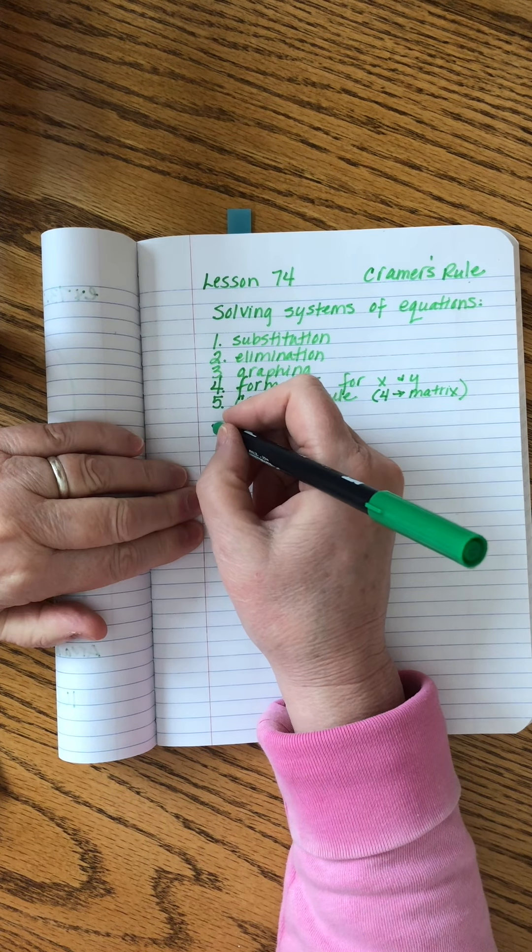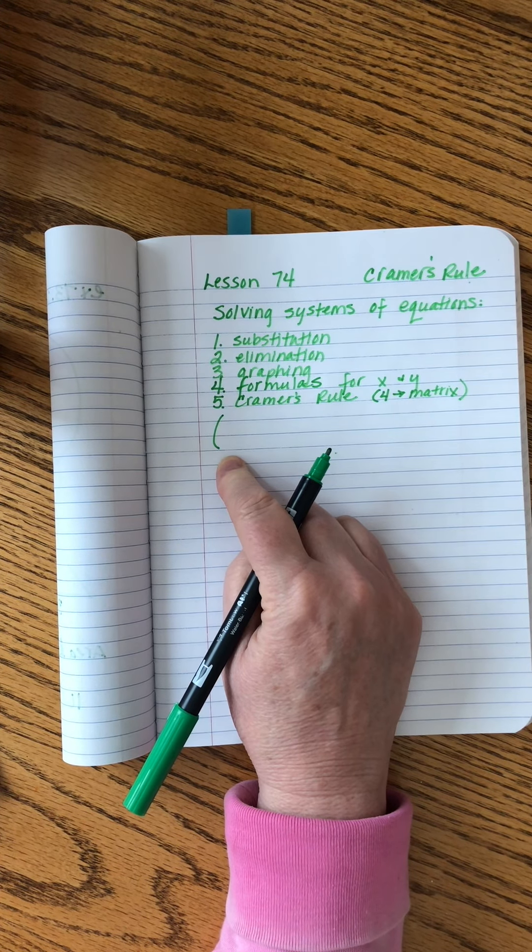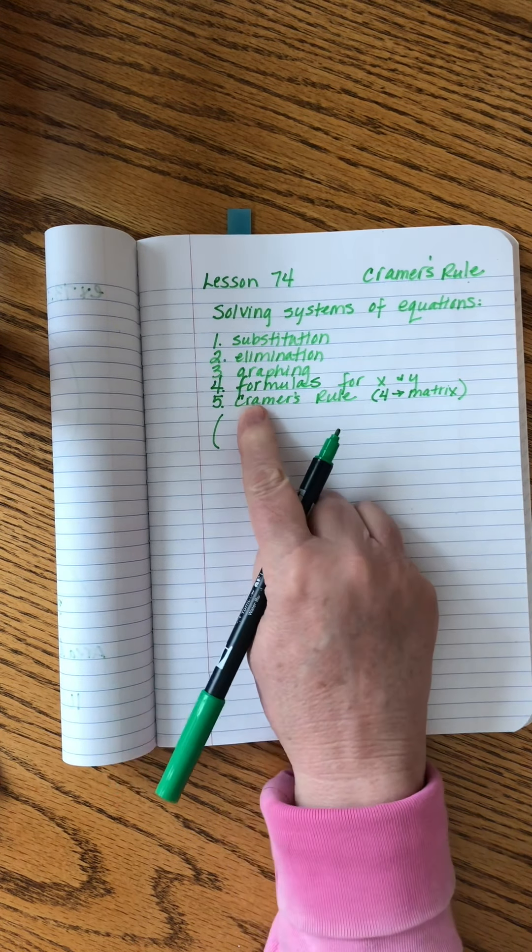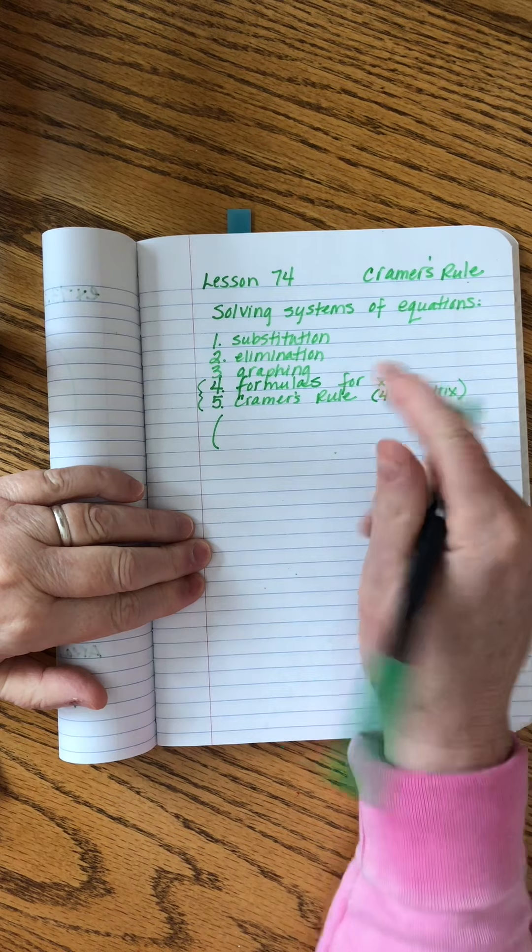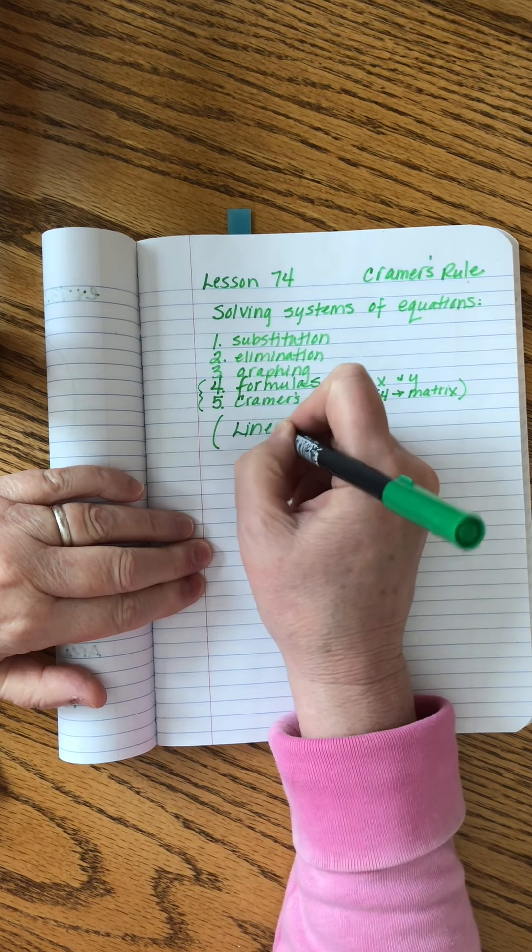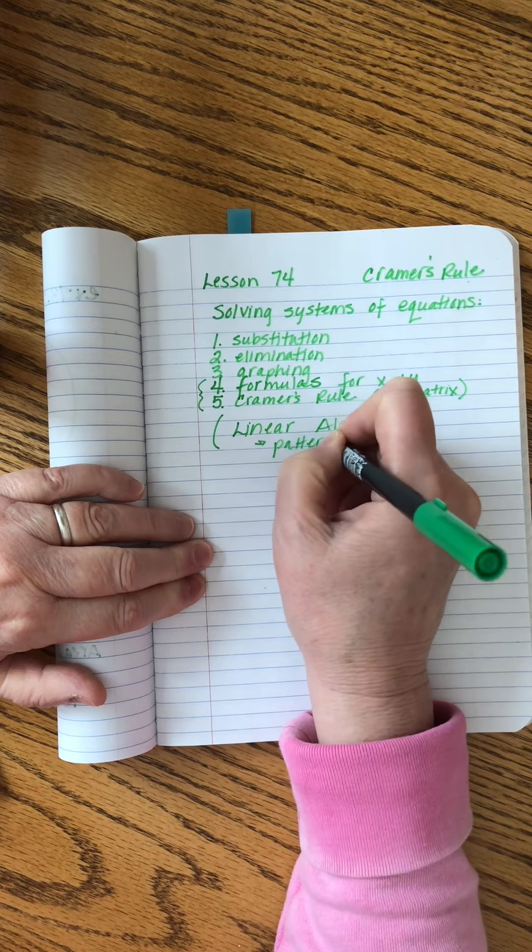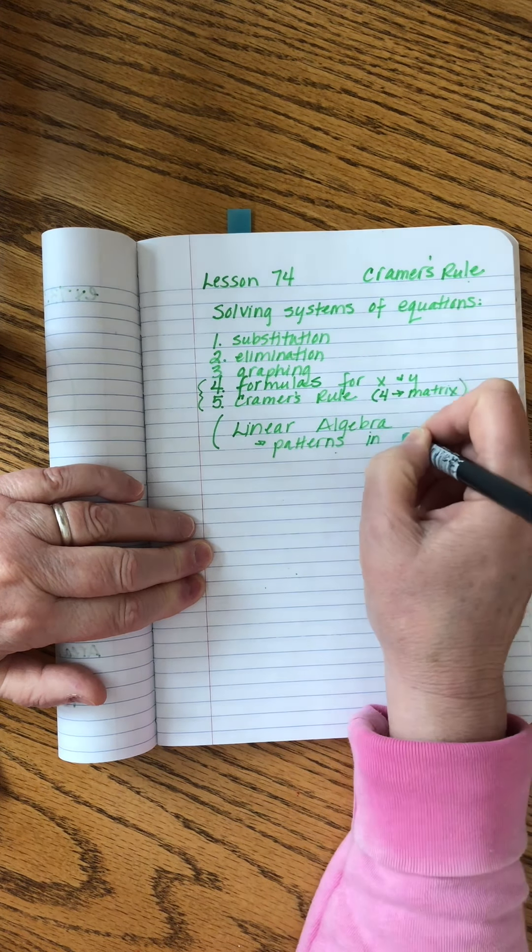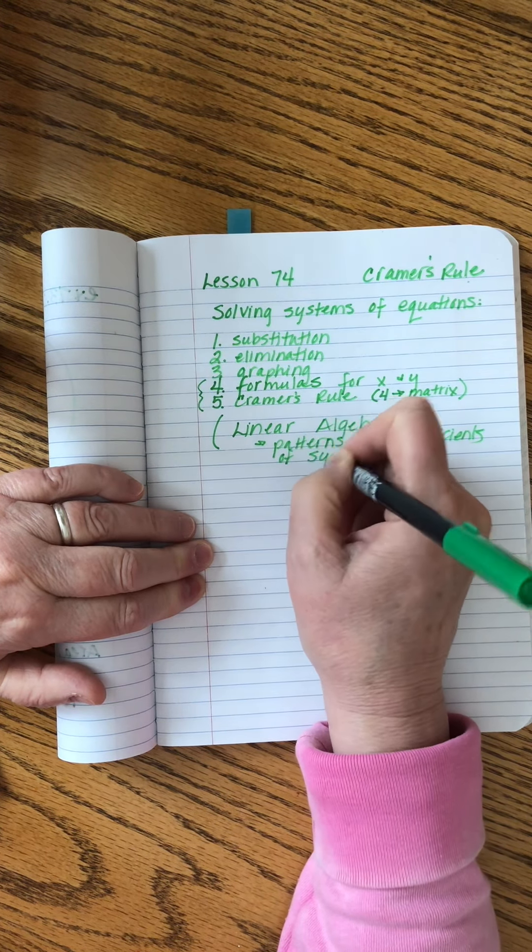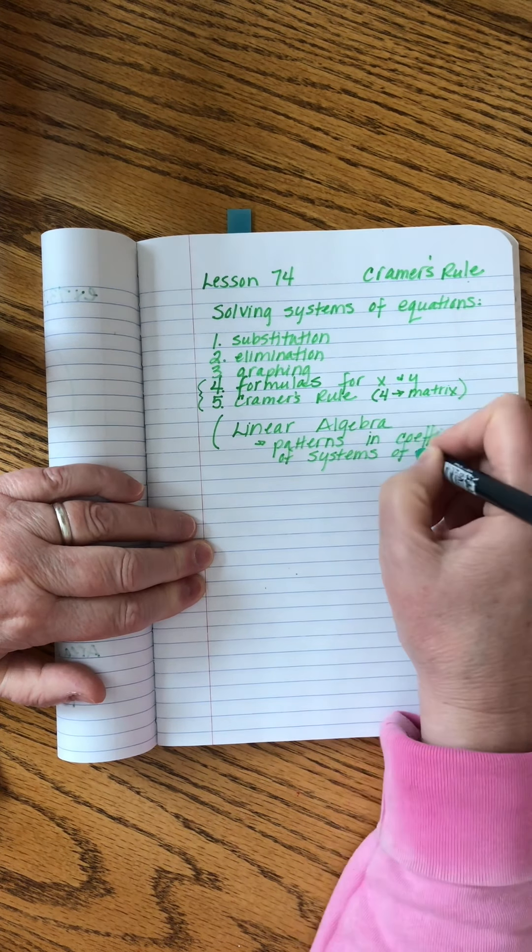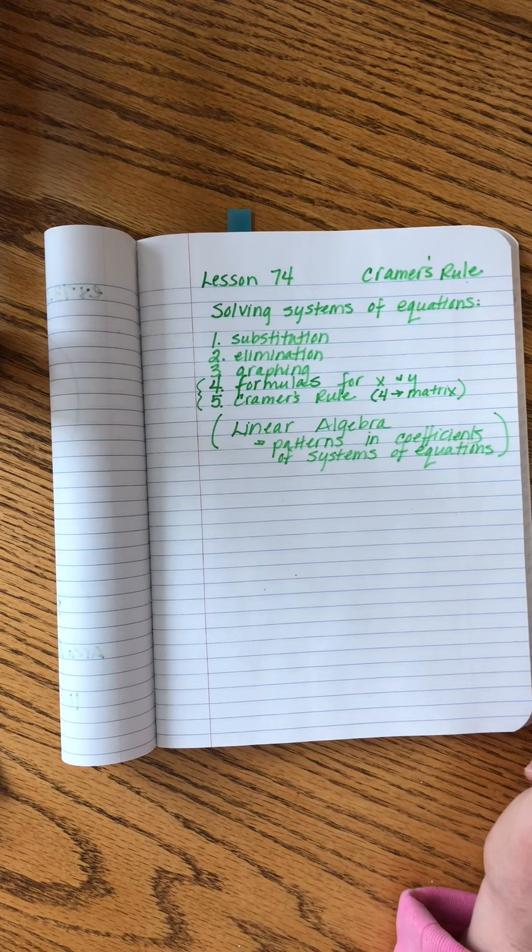One thing that I want you to know is that this study of looking at the patterns of the coefficients in linear equations, which is what we've been doing here, is a special branch of mathematics called linear algebra. It's mostly concerned with patterns in the coefficients of systems of equations. It goes on and on. We're not going to go on and on with it. We're just dabbling a bit.